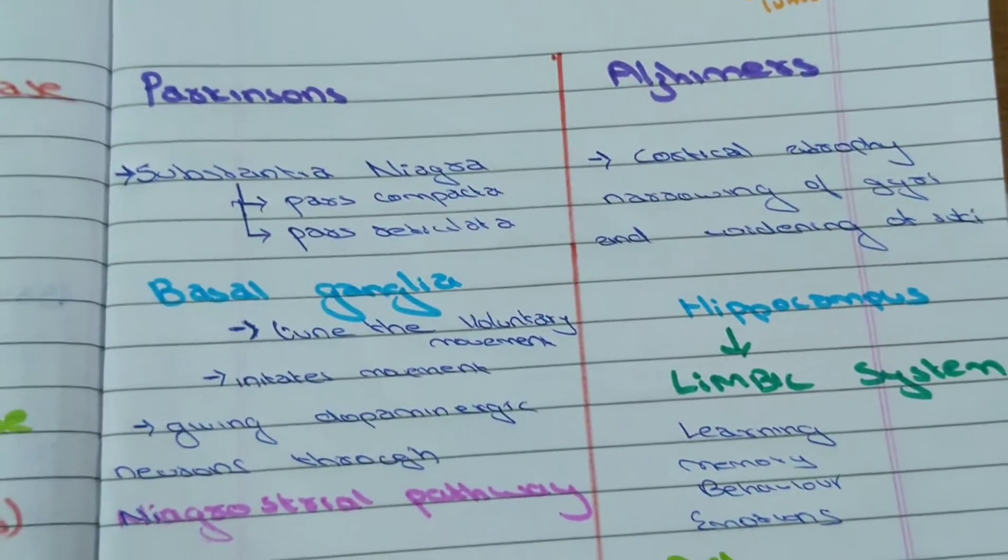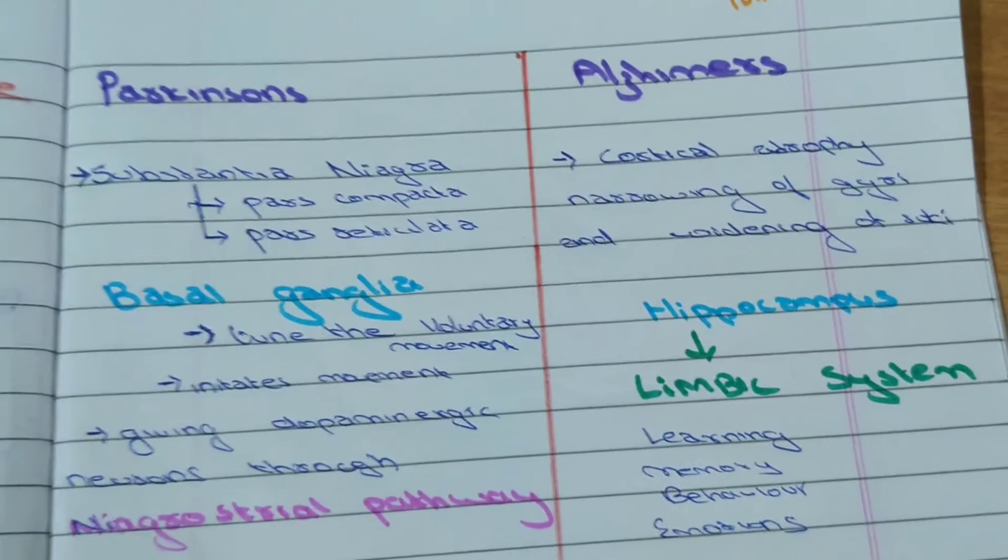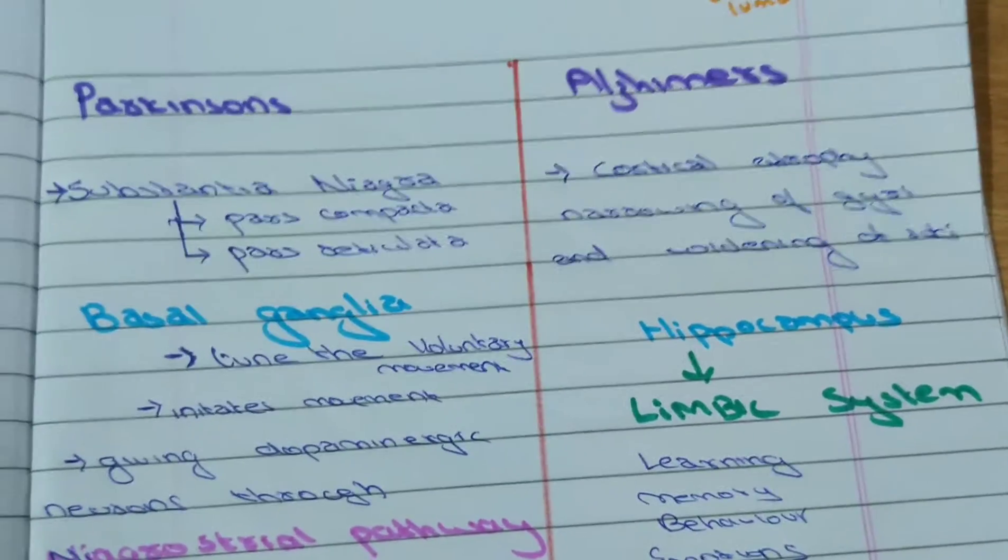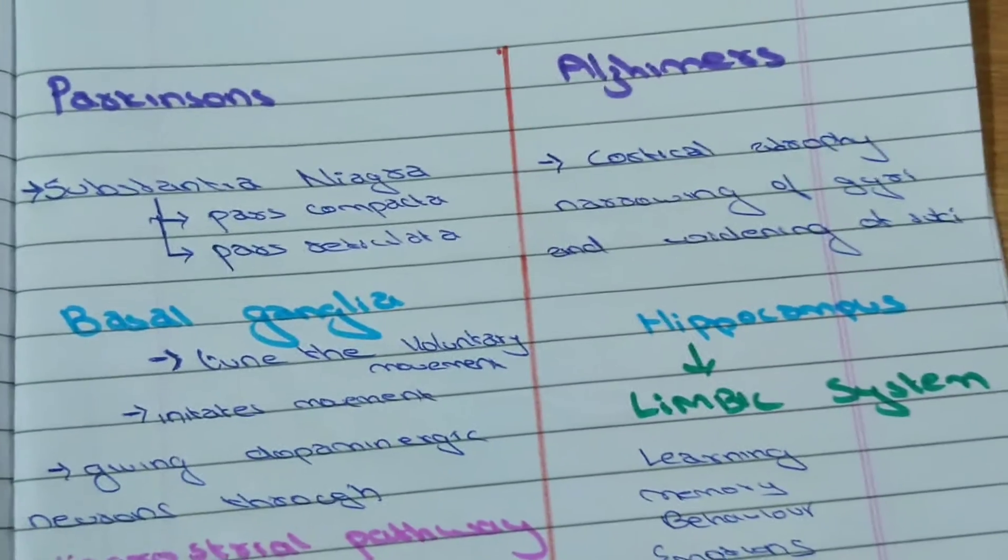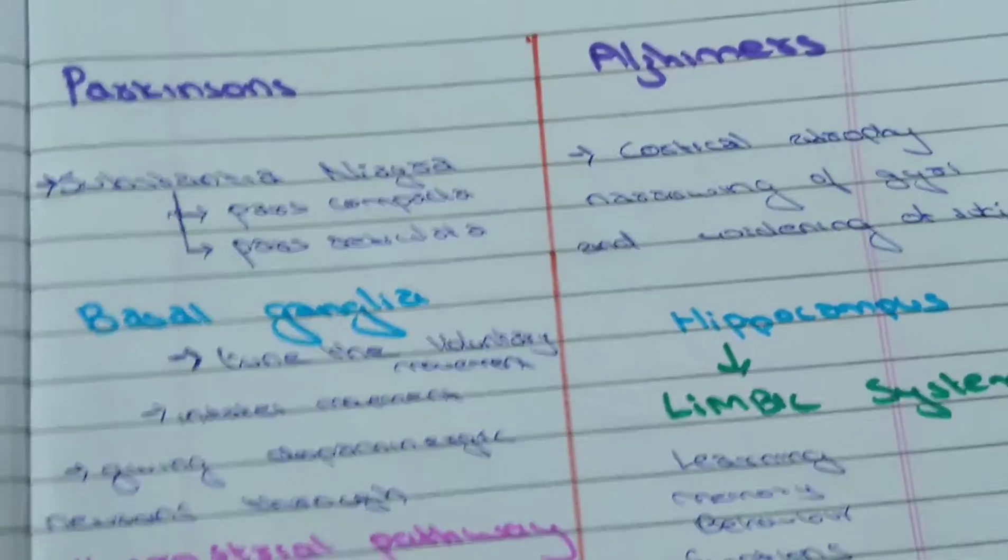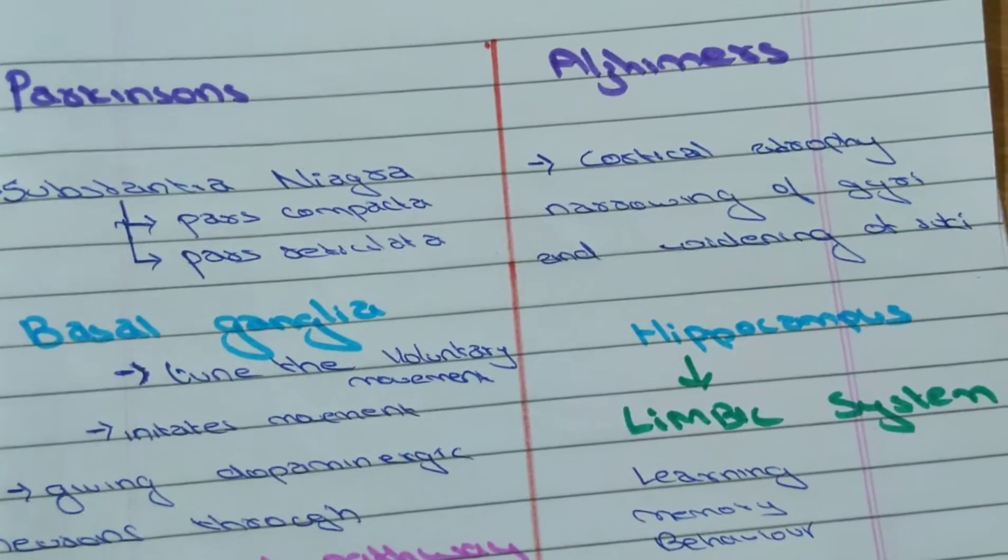As we told, both Parkinson's and Alzheimer's disease are neurodegenerative diseases. So a part of the brain is affected in them. In Parkinson's what is affected is basically substantia nigra. Substantia nigra has pars compacta and pars reticulata.